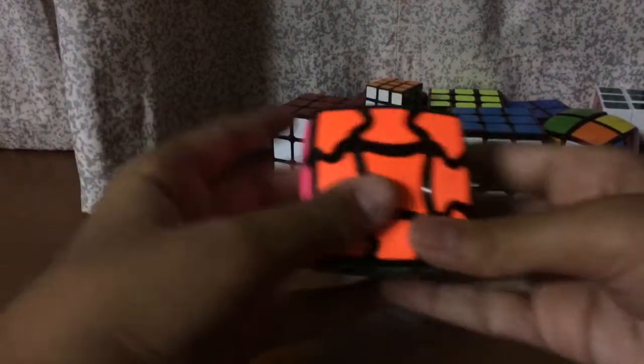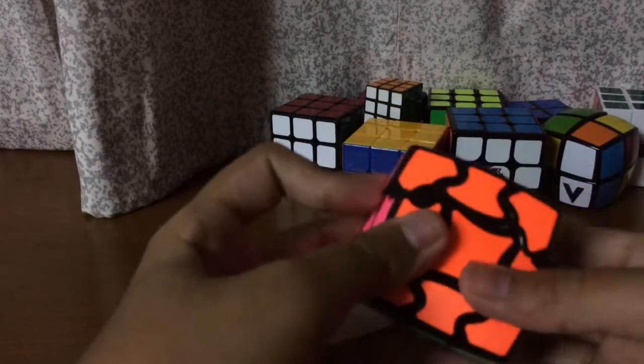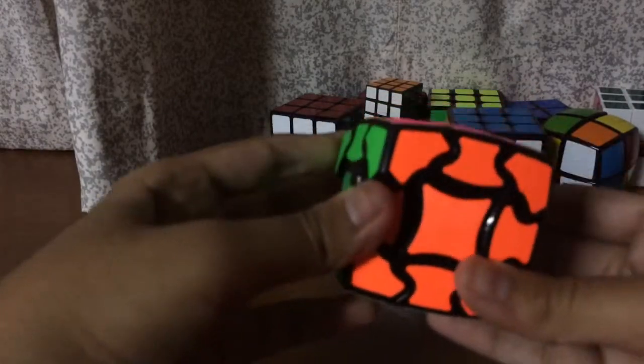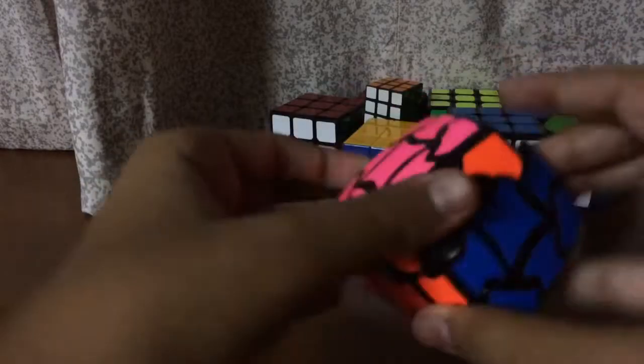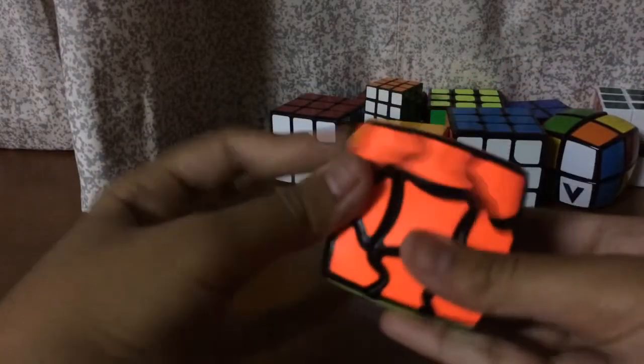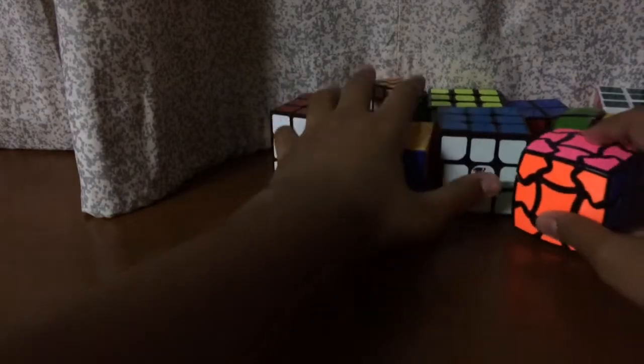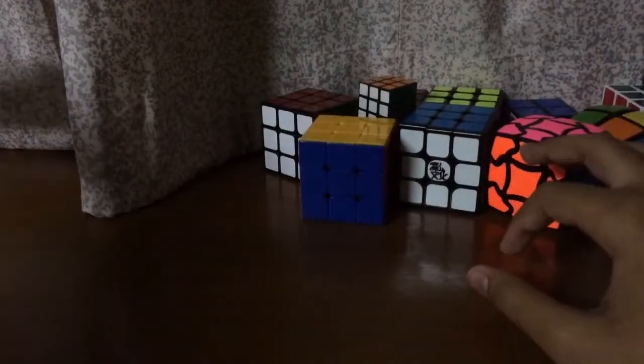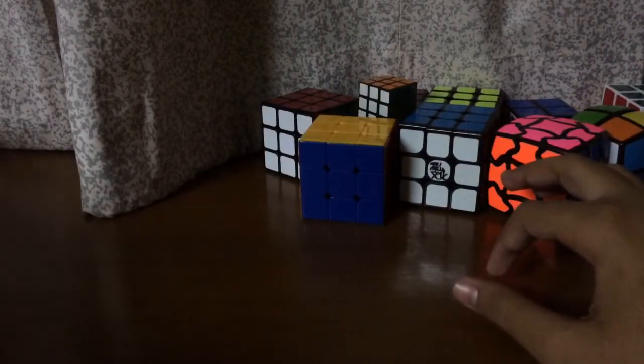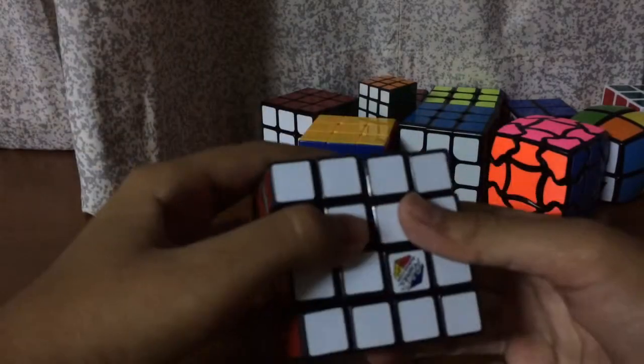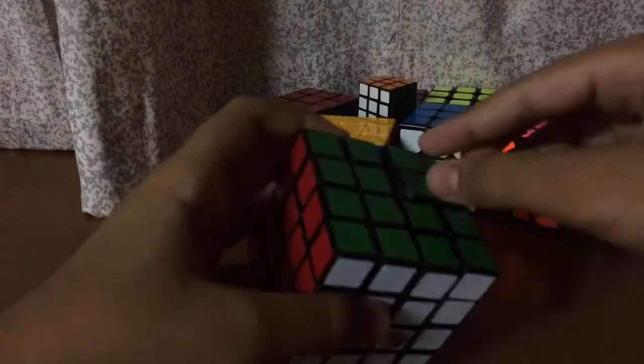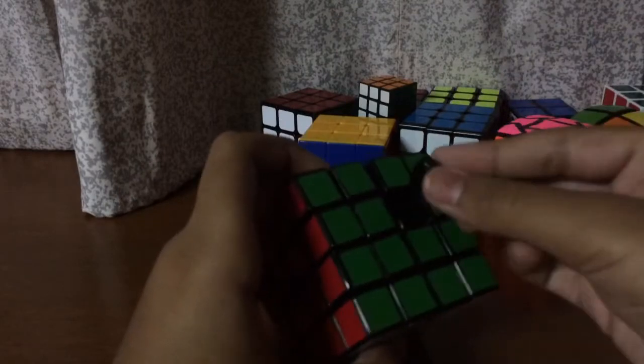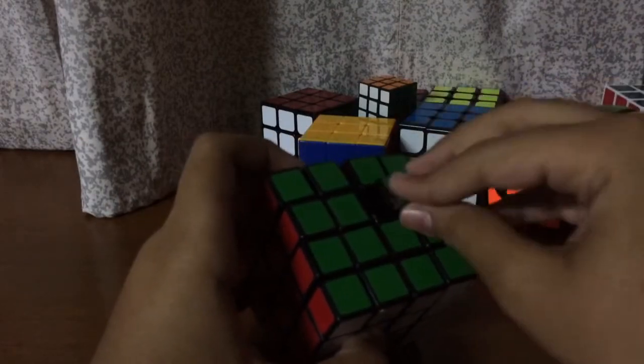And the last one is this, I don't know, shape mod I don't know what name it is but it's a 3x3 but different style. Okay now the 4x4s, this one is a Rubik's brand 4x4 but the piece is broken so I don't use it anymore.